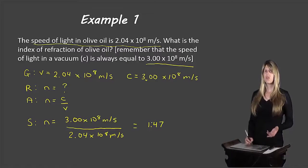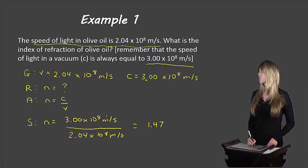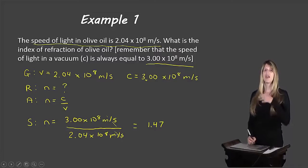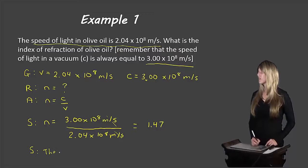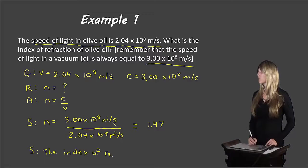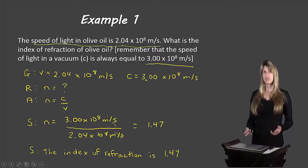You'll notice there's no units here because meters per second crosses out with meters per second, so N has no units. And so if we write a sentence here: the index of refraction is 1.47. So that's how we would solve a problem like this.